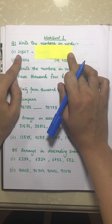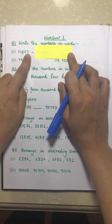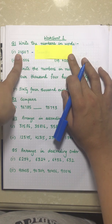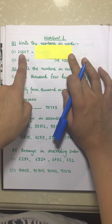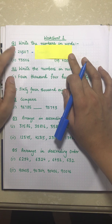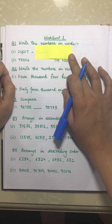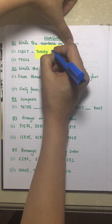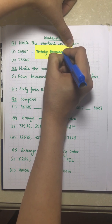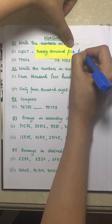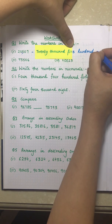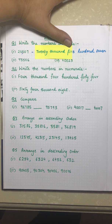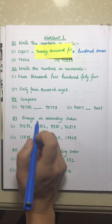The first question says: write the numbers in words. The first part is 20507. According to the Indian number system, we put a comma just after three digits from the right, and we can easily read it as 20,507 — twenty thousand five hundred seven. The other two questions are for you to practice.